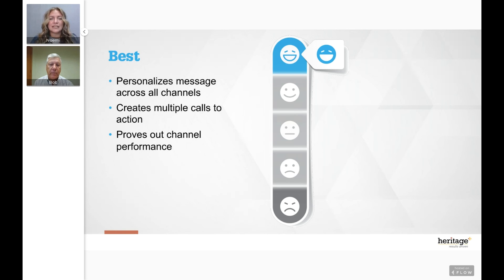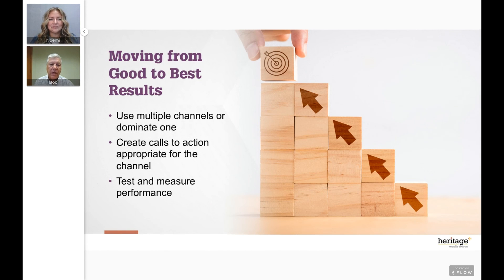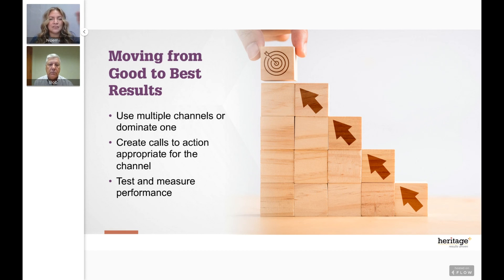To move from good to best: use multiple channels as much as you can, or absolutely dominate one. Create calls to action appropriate for each channel. Test and measure — the more information you have about what's happening in your campaign, the better your next decision will be. Being intentional from strategy through planning to results is what gives you the ability to do better next time.